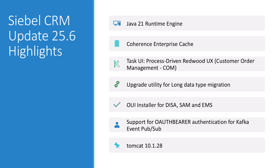The Java Runtime Engine, or JRE, shipped with Siebel components gets hiked up from JRE 8 to JRE 21. Oracle Coherence is back and provides a global caching engine. Redwood brings a fresh user experience to task-based UI. Desktop Integration Siebel Agent, or DESA, Siebel Approval Manager, SAM, and Email Marketing Server have a new installer. Upgrades from versions prior to IP17 benefit from a new utility. Siebel to Kafka integration supports OAuth Bearer. And thanks to the Java 21 update, Tomcat 10.1 takes the stage as the application container of choice.